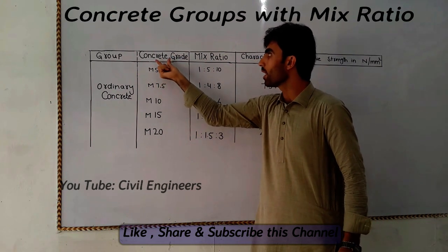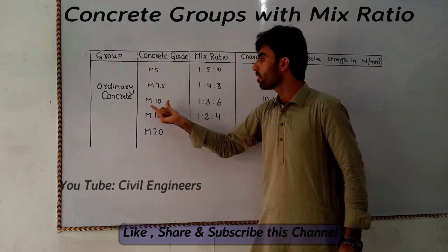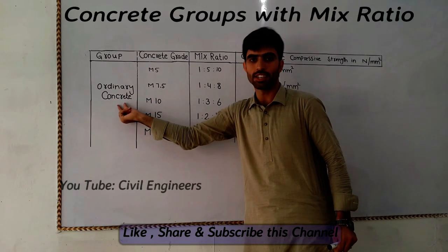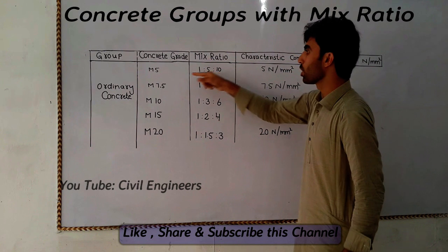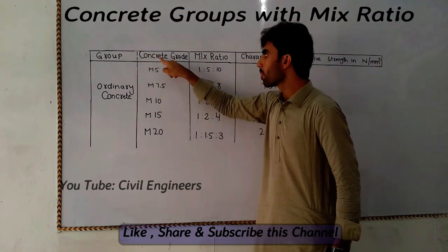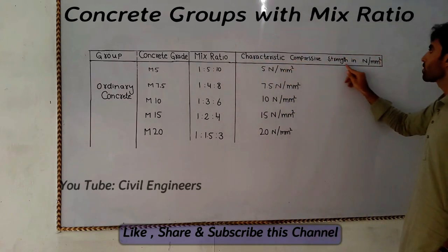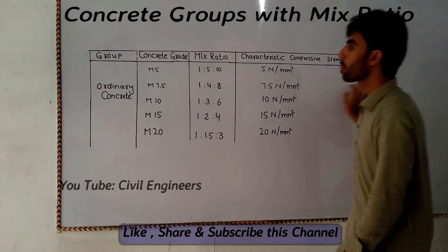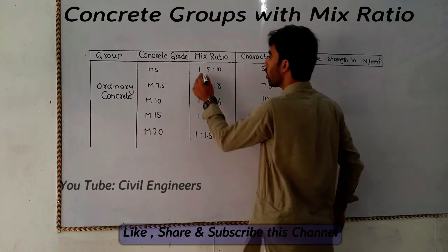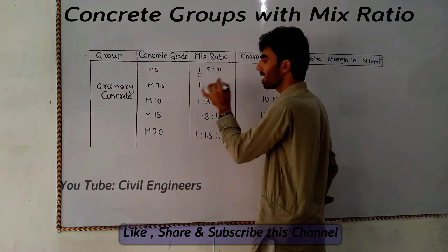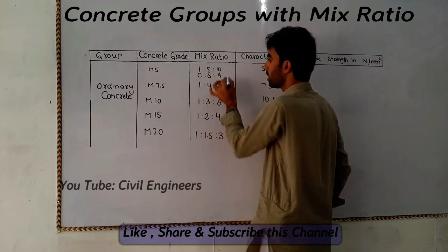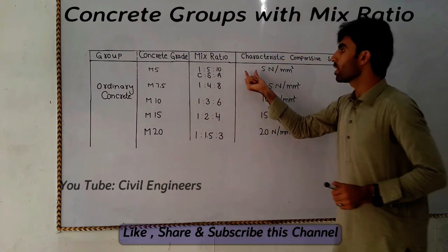So M5, M7.5, M10, M15, M20 — these concrete grades are ordinary concrete. The mix ratio for M5 is 1:5:10. So in this ratio, 1 is cement, 5 is sand, and 10 is aggregate, meaning crushed stone.